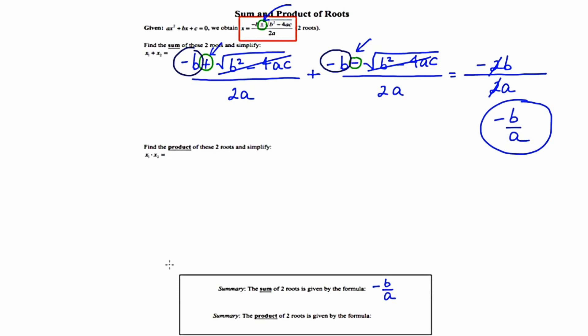Now the second derivation is for the product of two roots. Product means multiply. So, I'm going to set up a multiplication problem using these two roots.